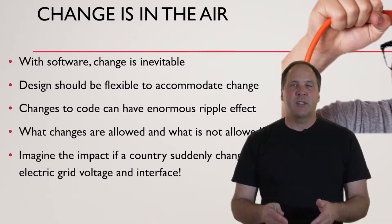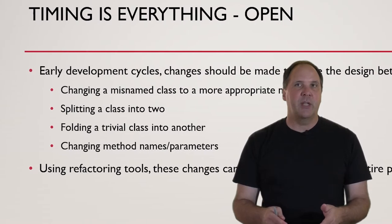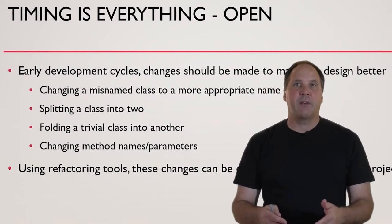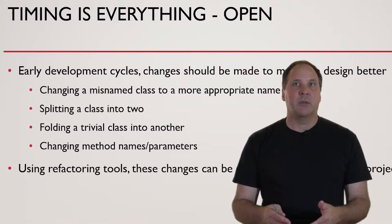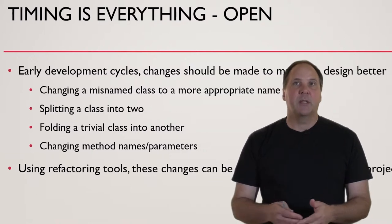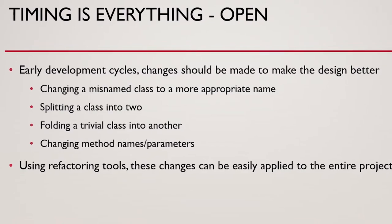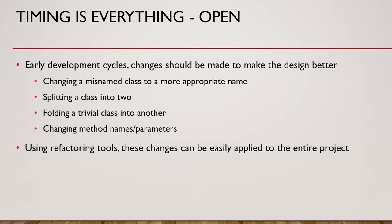If it's an acceptable ripple effect and we can easily make the changes, then we might decide to go ahead and modify a class or module to some extent. But if the impact of the change is not measurable — in other words, it involves other projects besides our own — then we certainly don't want to make those kinds of changes. Timing is everything.